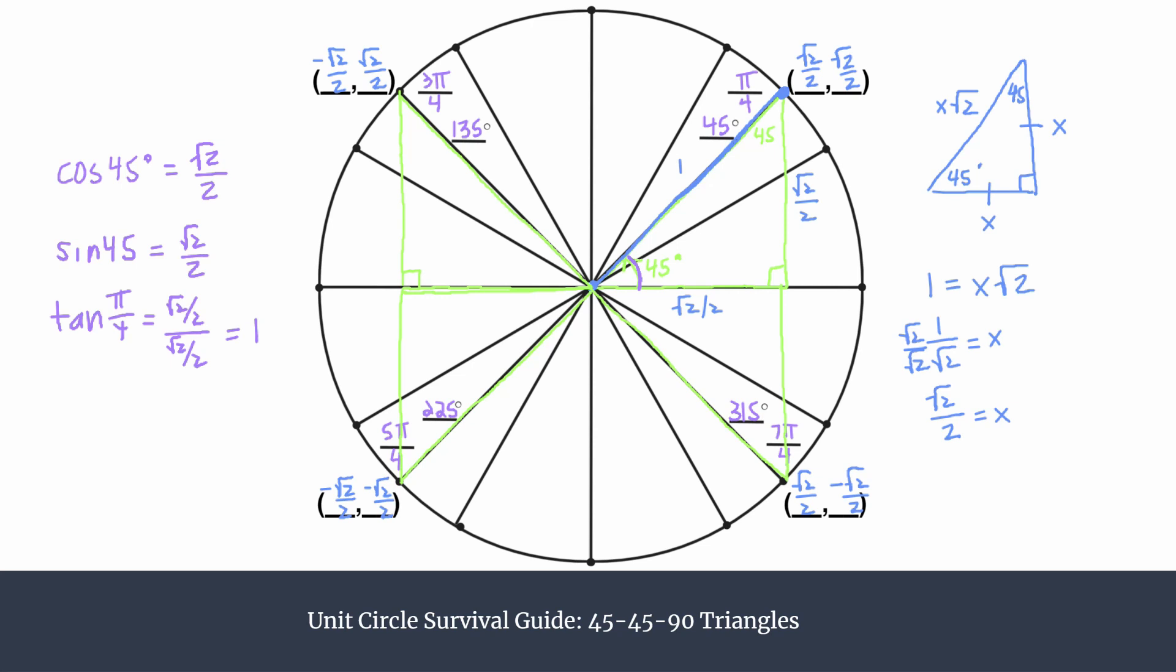Do notice if you were finding exact values for an angle that was not in the first quadrant, you would want to be very careful about the sign. Is it positive or is it negative? And just think about where is it located on a quadrant system. So should the x-coordinate be positive or negative? Should the y-coordinate be positive or negative? And we'll get into that a lot later.